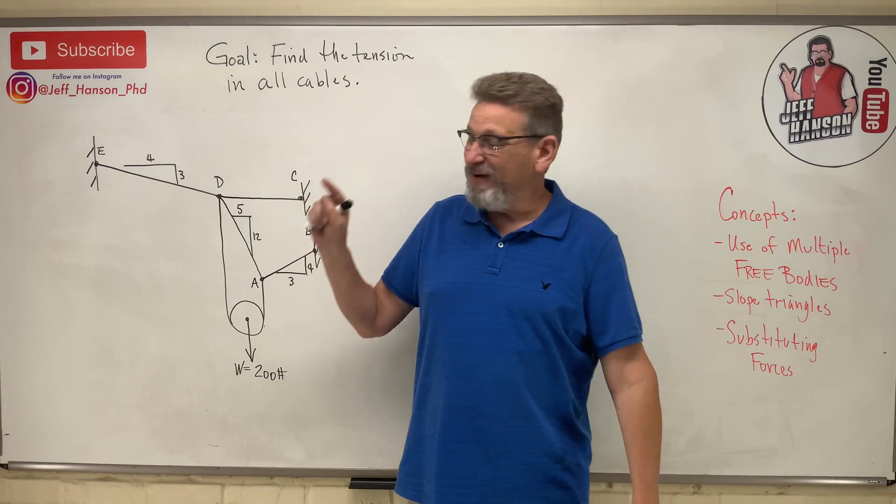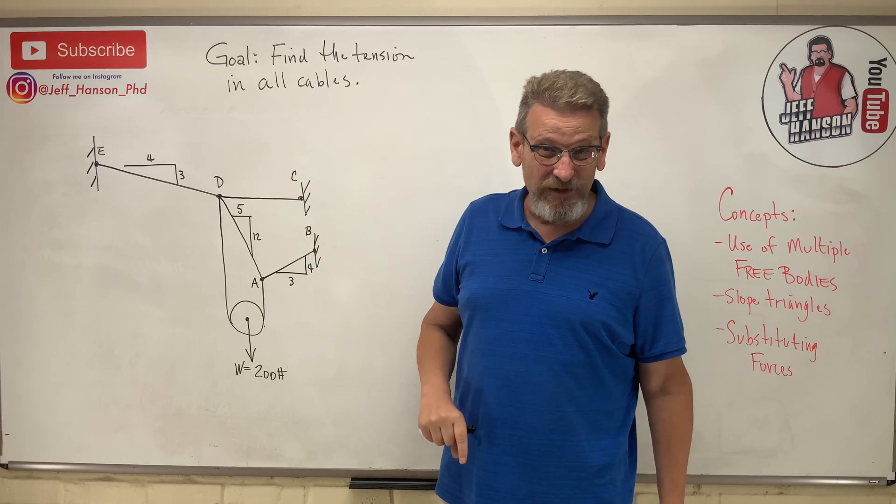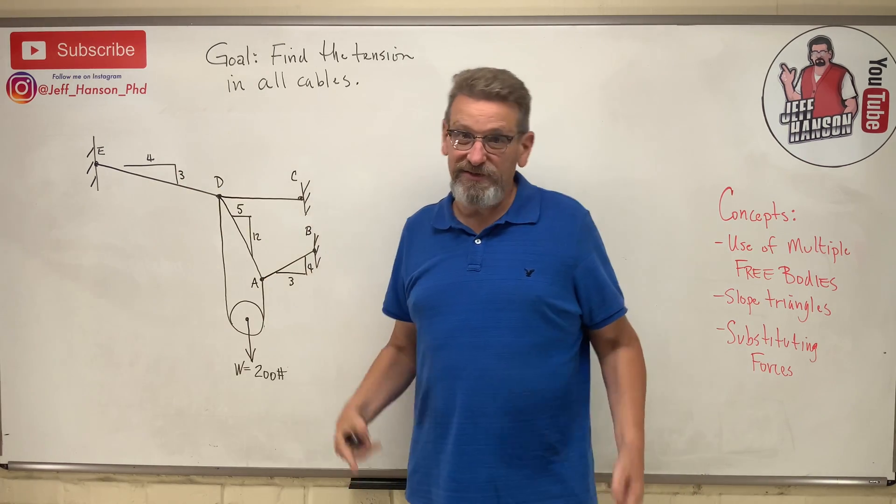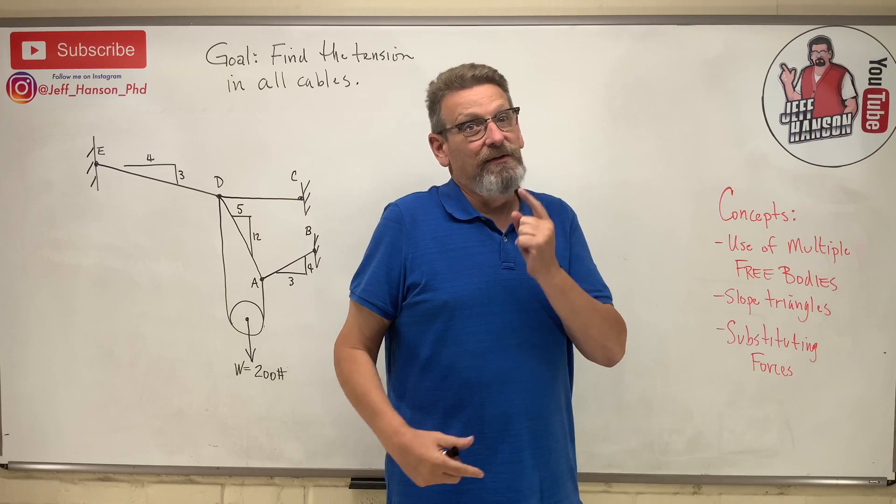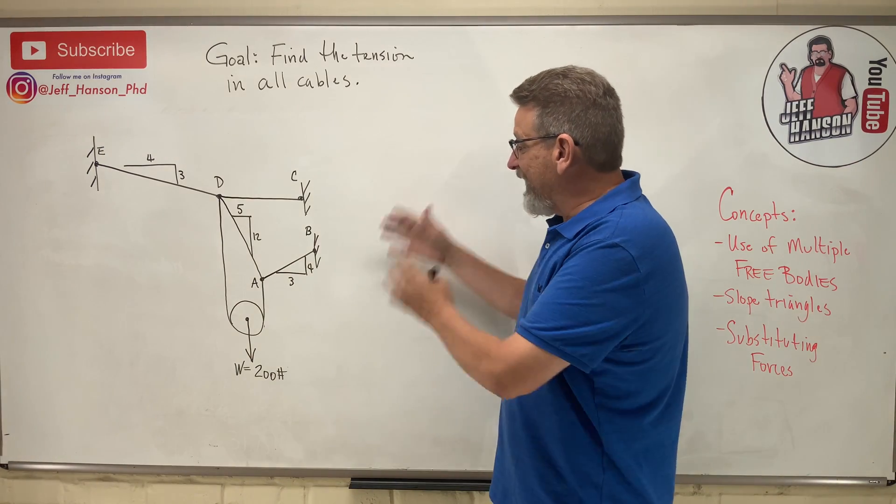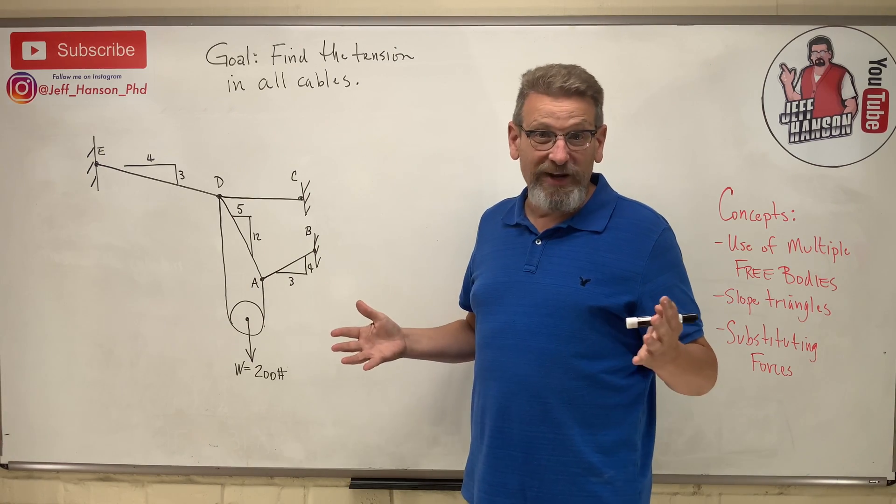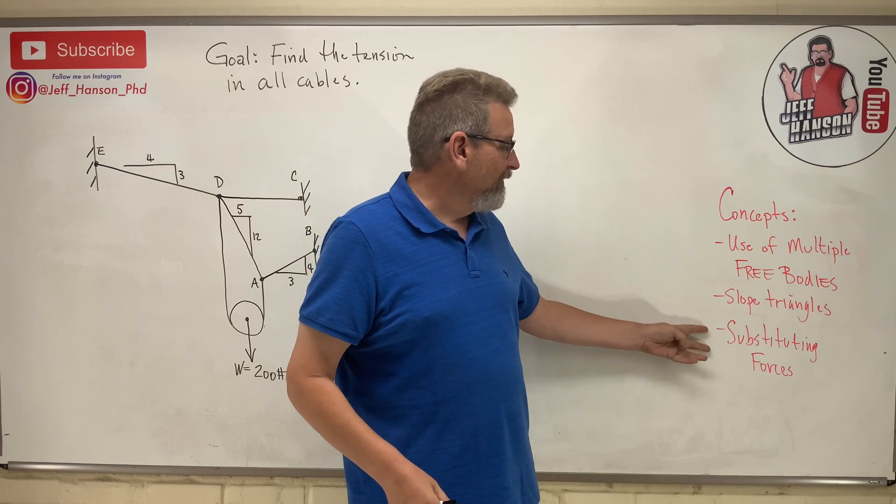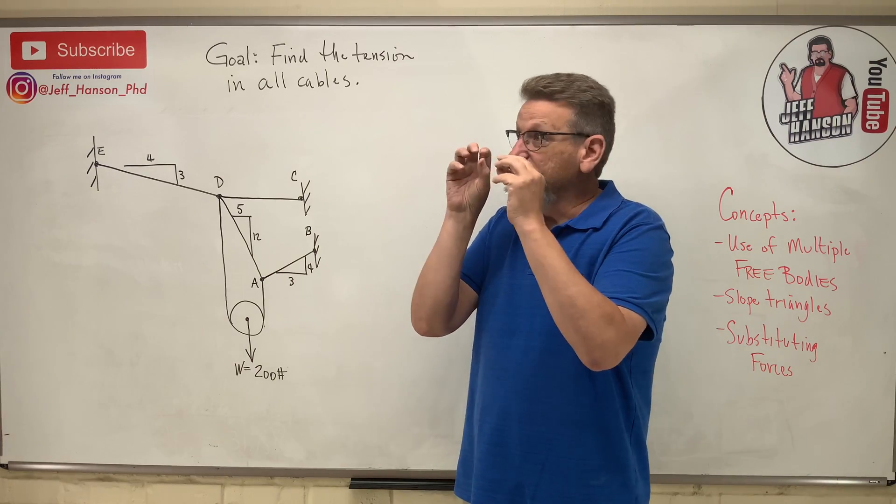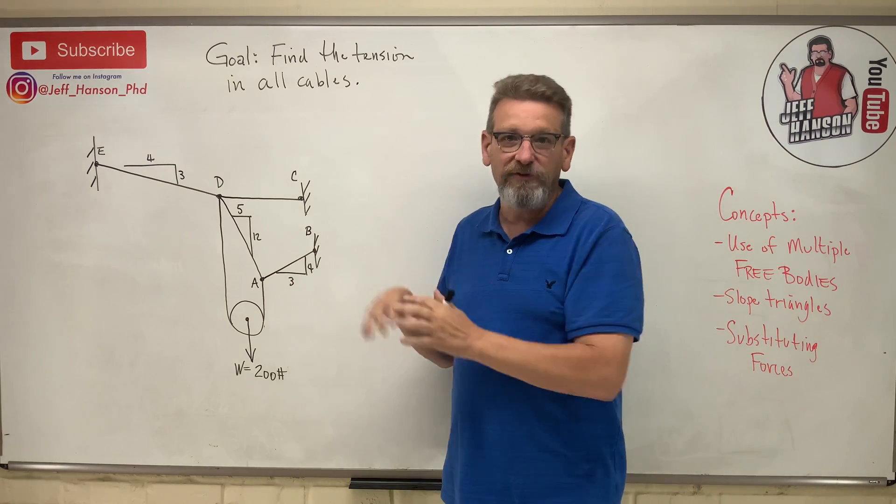It is going to take more than one free body diagram to solve that problem. You know what they want us to do? Find the tension in every single cable. So that cable, that cable, that cable, that one, and that one. I've got to find them all. So it's going to take more than one free body. Slope triangles. Every single angle in this whole problem is defined with slope triangles. And then the last thing is substituting forces. We'll find from one free body some information and then take that to the next free body to solve that free body, and from there to the next one until we get it all done.